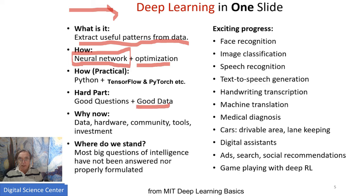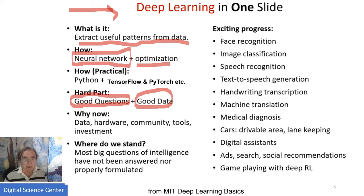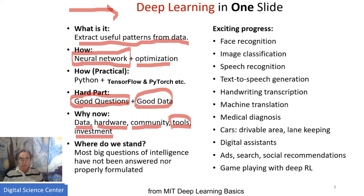You do have to find good data — that's the hardest part, because data is hidden by people. You need to ask the right questions. Now is appropriate for deep learning because we have lots of data, big data is here, we have the right hardware with GPUs, there's strong community support, the tools in this field are just amazing, and there's been a lot of investment in making this field advance so fast.